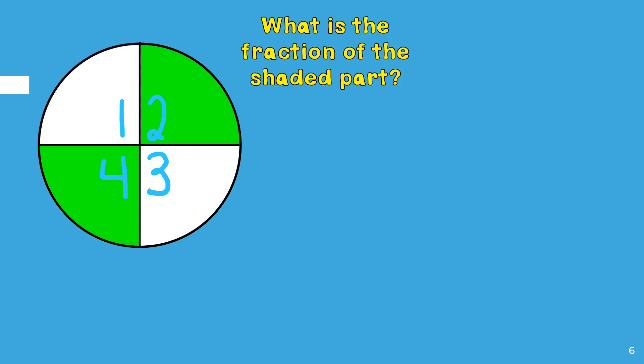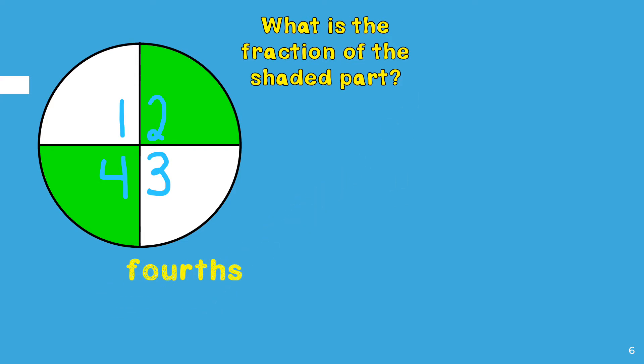Since this circle has four parts it is partitioned into fourths. Then I will count how many parts are shaded or colored: one, two. There are two parts that are shaded, so the shaded part of this fraction is two fourths.